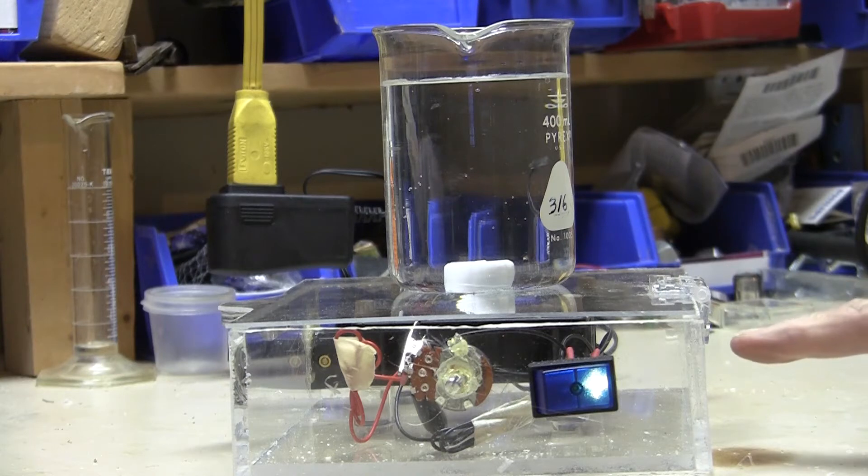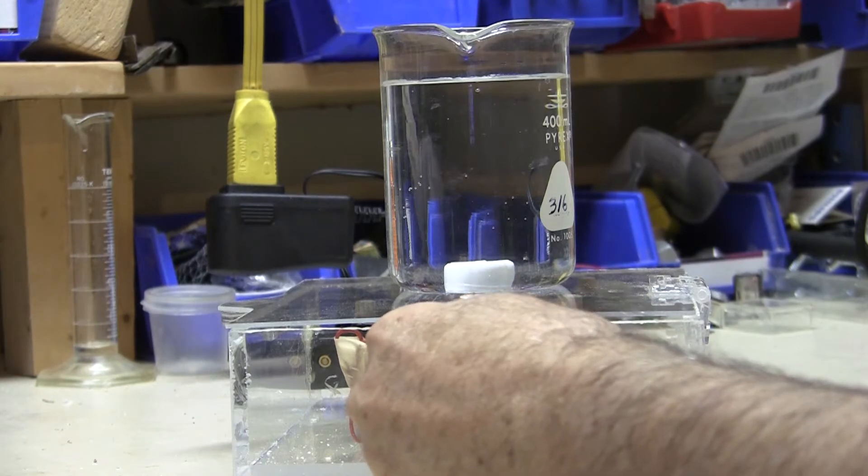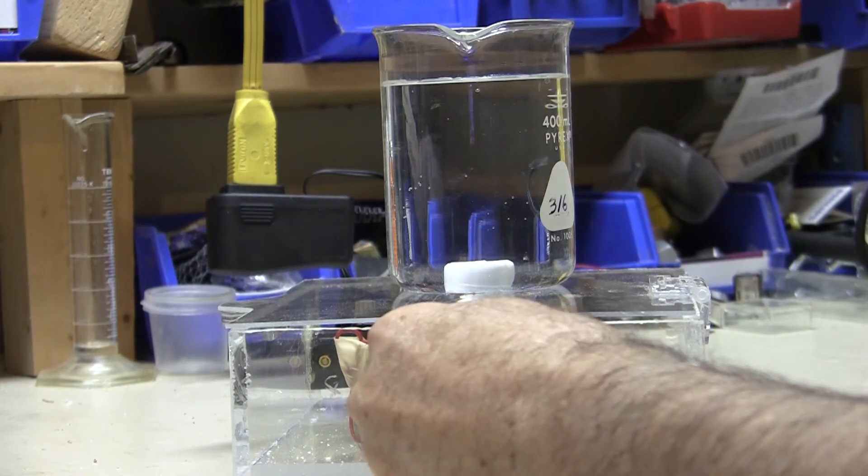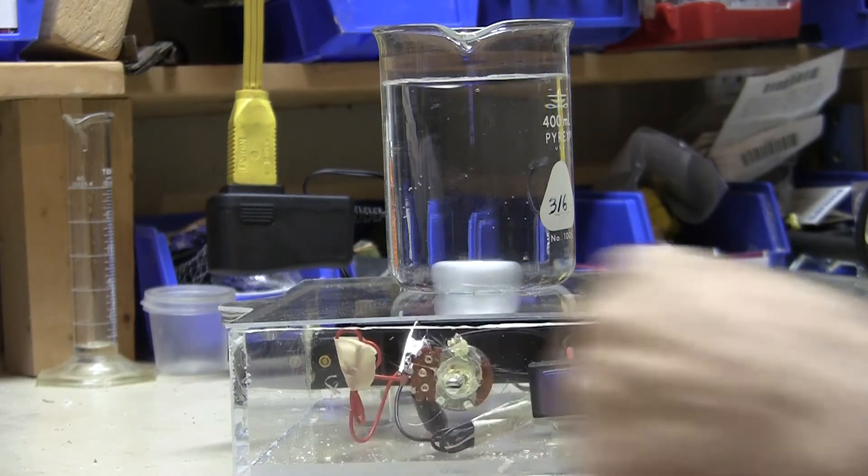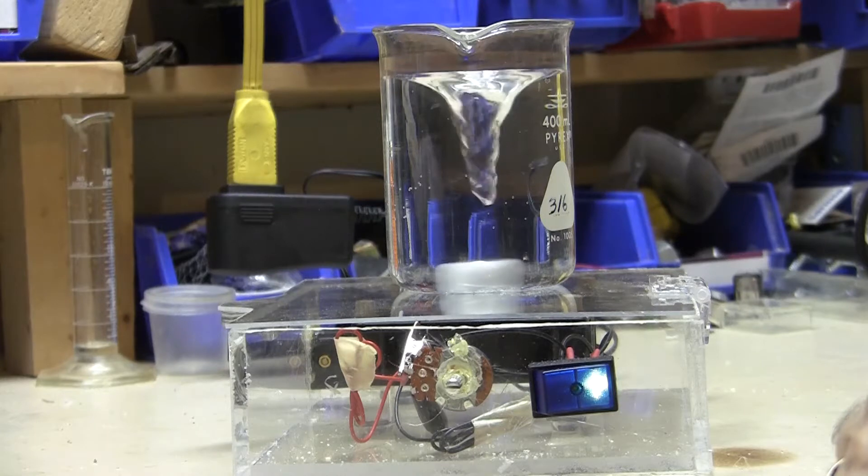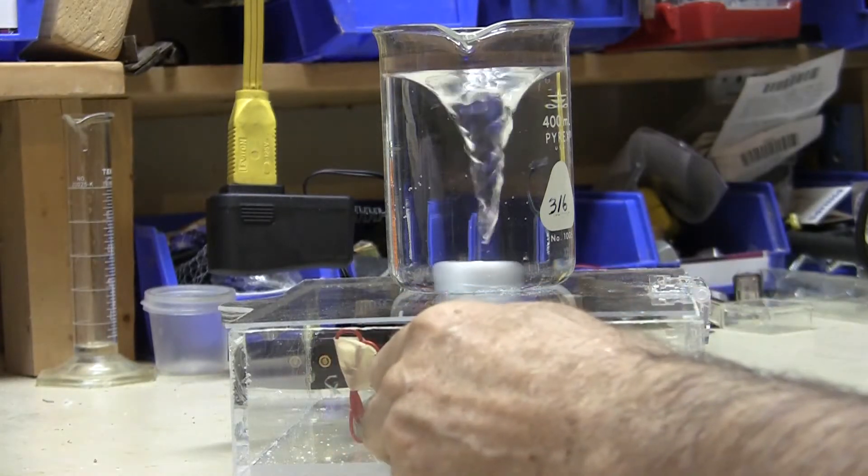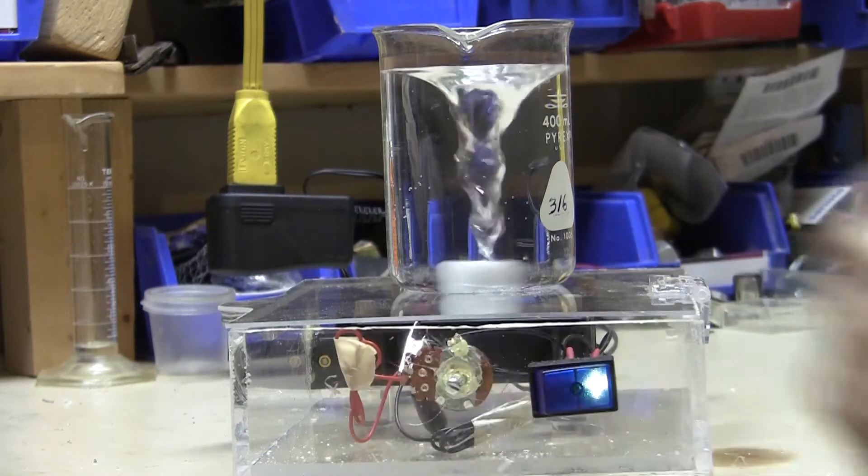Here's my first magnetic stirrer based on a CPU fan, and here was the problem. When it first starts, it's already faster than I want. So the speeds are fast and very fast.